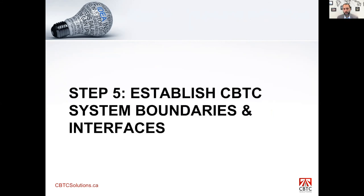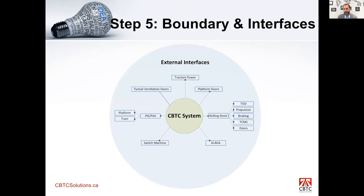Step five is establishing system boundaries — defining which subsystems or third-party suppliers the CBTC system will interface with. Using the same mind-map approach, we identify external interfaces such as rolling stock, train doors, platform doors, traction power, tunnel ventilation doors, PIDS/PIS, switch machines, and SCADA. Each interface should be identified and expanded to determine how it interfaces with the CBTC system, what's expected from that subsystem, and what's expected from the CBTC system in return.